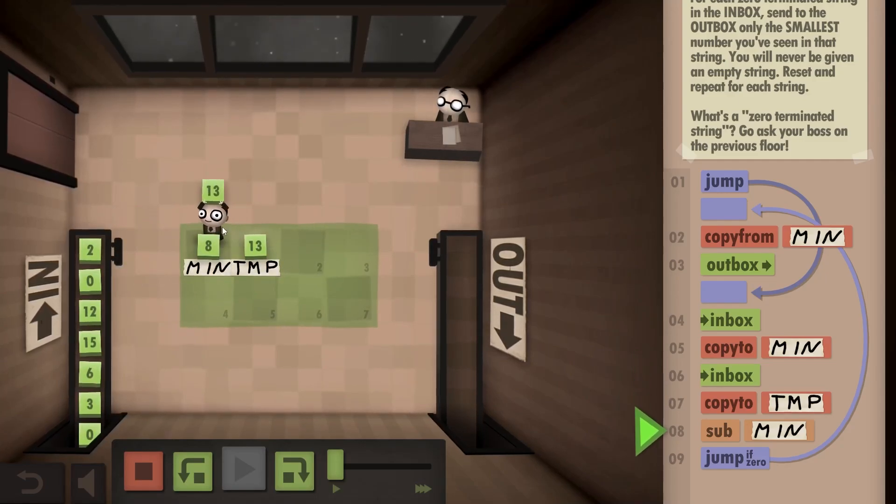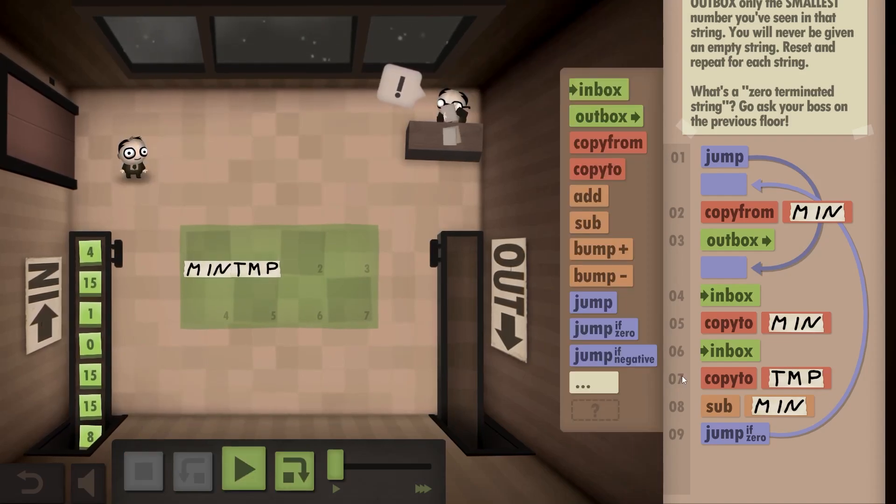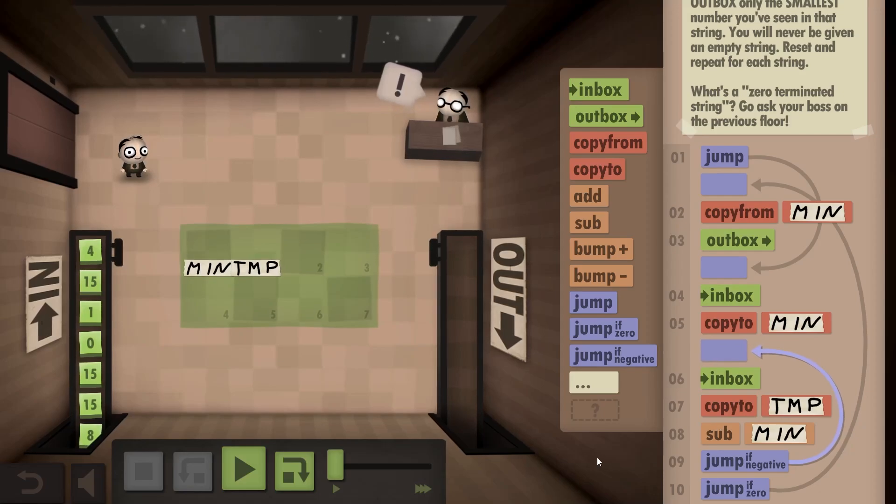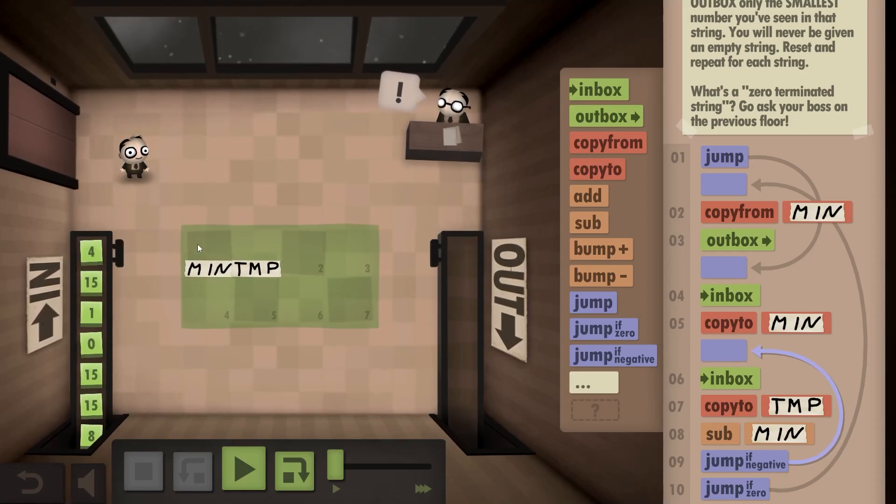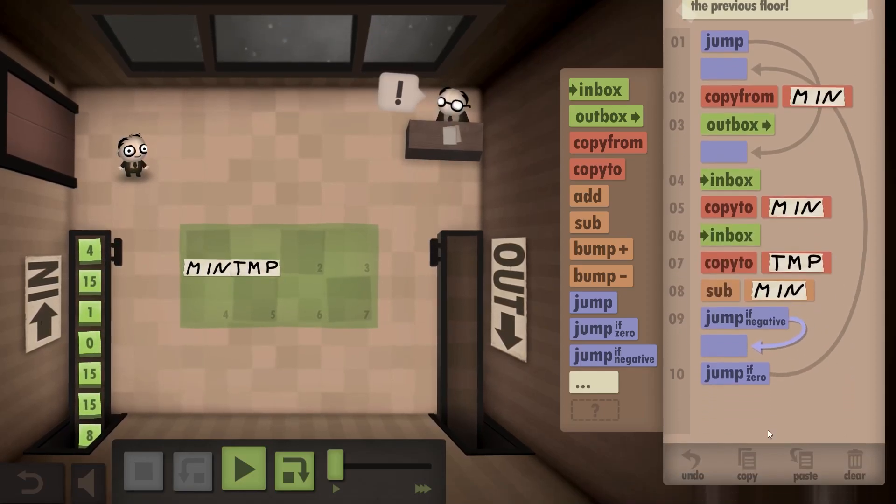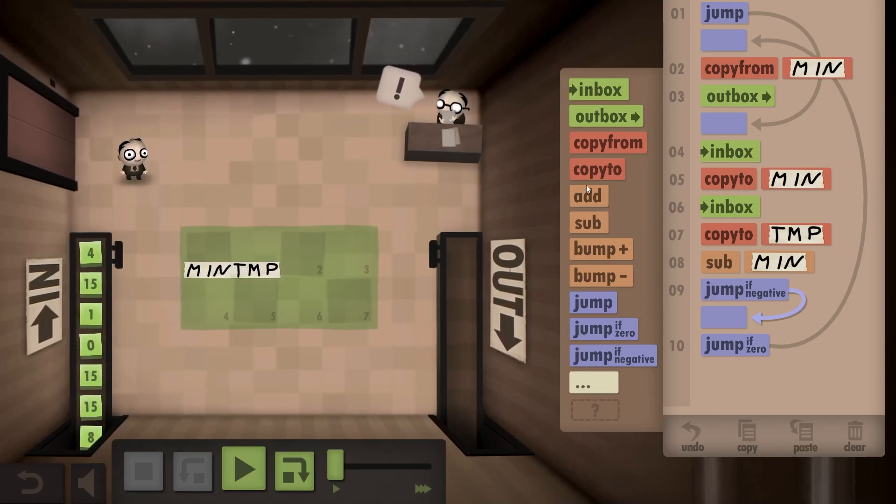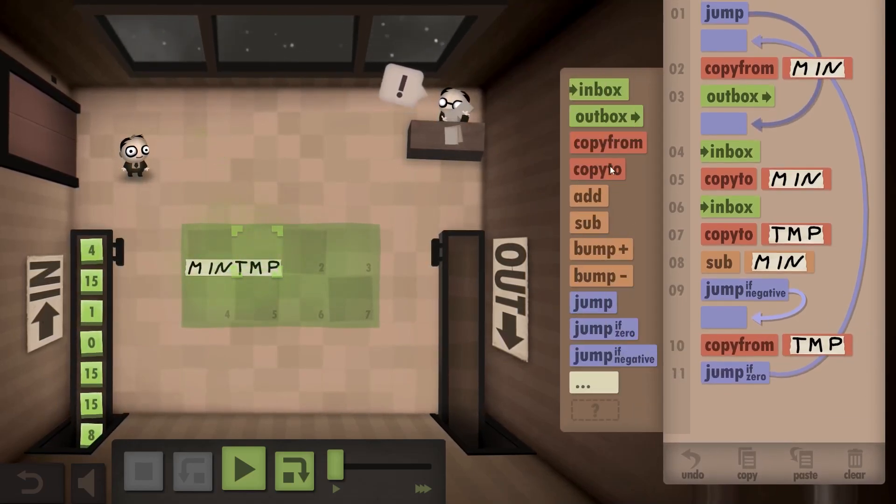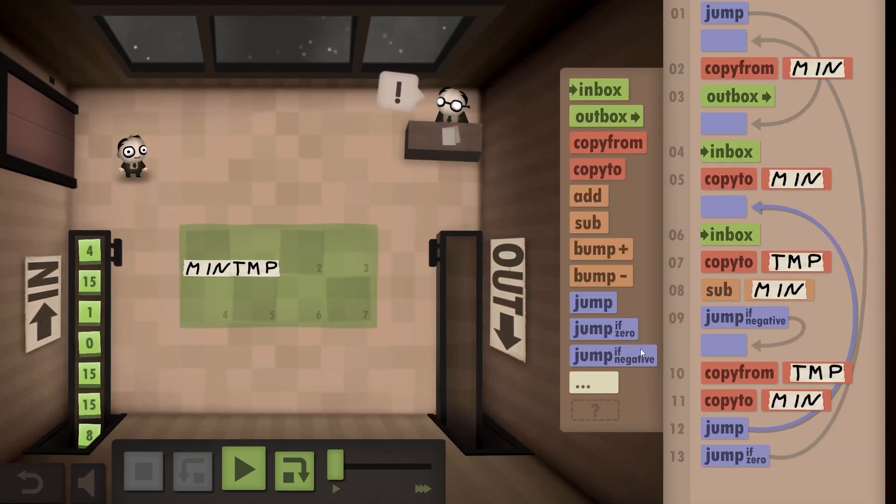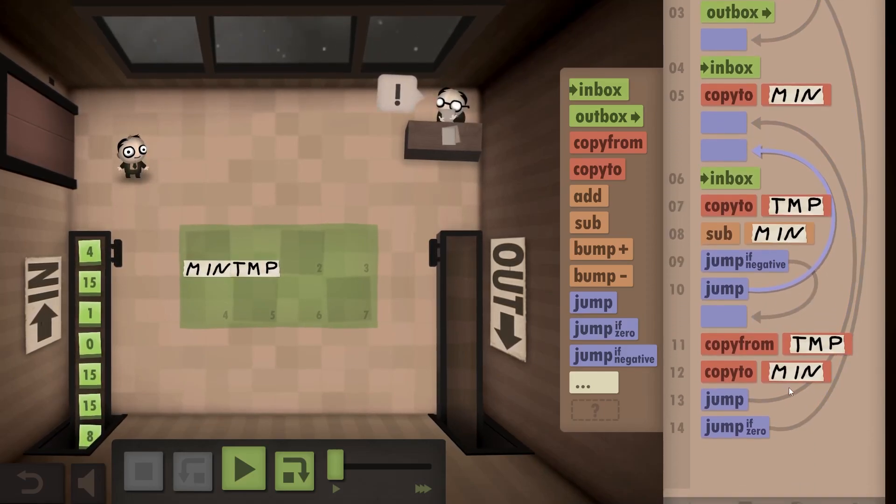So 8, 13 goes there, and then you do 13 minus 8. Okay, so you do 13 minus 8. If it's negative, you just inbox again because the minimum was indeed the minimum. Wait, yes, no, no. If it's negative, the new minimum is in temporary, the thing you just picked up. So copy from temporary and copy to minimum and repeat. And if it wasn't negative, then the original minimum was correct. So you can just inbox again.